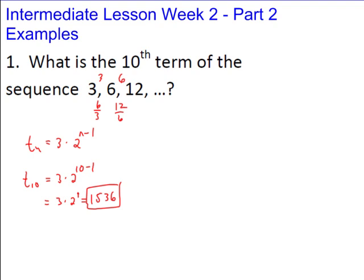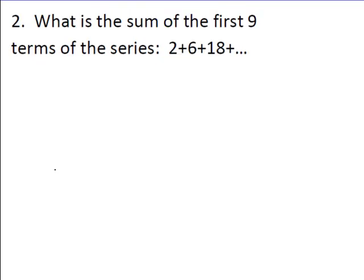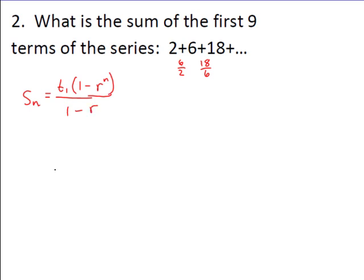Notice that in a geometric sequence, if it's going up it increases very quickly. Now we move on to sums. This next problem is a finite-term sum of a geometric sequence with ratio 3. We use the formula: S_n = t1 times (1 minus r to the n) over (1 minus r). Our first term t1 is 2, the ratio is 3, and we want the first 9 terms.